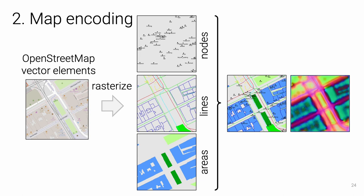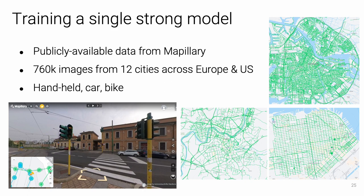We train a single model that generalizes to unseen locations with arbitrary kinds of images. Using the Mapillary platform, we collect a large, crowdsourced dataset of images with ground truth poses, captured in 12 cities in Europe and in the US, by cameras that are handheld or mounted on cars or bikes. Such visual diversity is key to generalization.